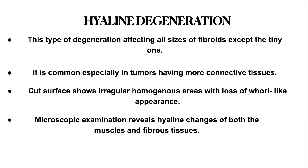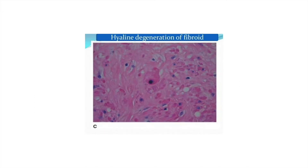Hyaline degeneration affects all sizes of fibroids except tiny ones and is common especially in tumors having more connective tissue. The cut surface shows irregular homogenous areas with loss of whorled appearance. Microscopic examination reveals hyaline changes of both muscles and fibrous tissues. This is a histopathological picture showing hyaline degeneration of the fibroid.